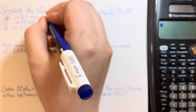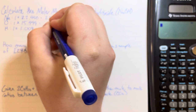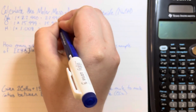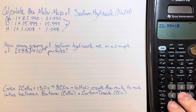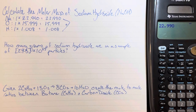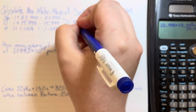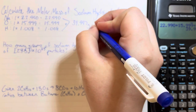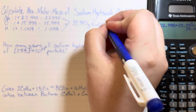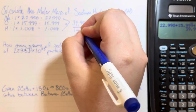1 times anything is that thing. Now all I need to do is add all of those up. The number I got was 39.997, and this will have the unit grams of sodium hydroxide for every one mole of sodium hydroxide.